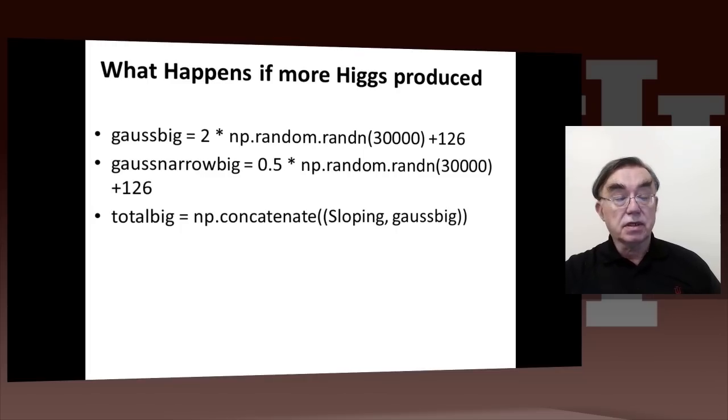Bumped up the Higgs cross-section, or probability of being produced by a factor of 100, and then see what we get. That's just putting 30,000 in here for the RAND-N, and we add that to the same old sloping we have before with 42,000 events.